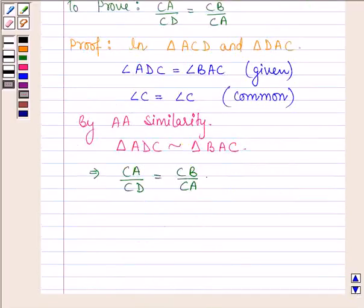Since if in two triangles the corresponding angles are equal, then their corresponding sides are proportional.